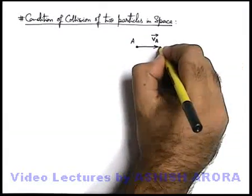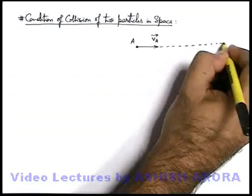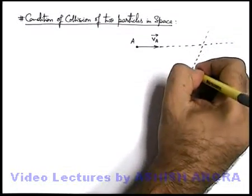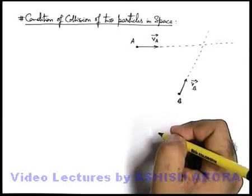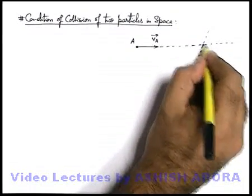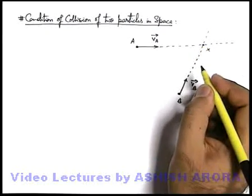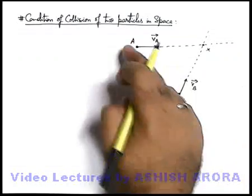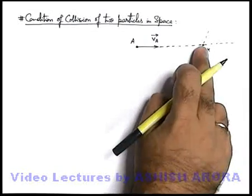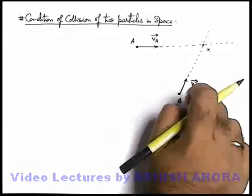If we just extend their lines of motion, so A would be moving on this line and B would be moving on this line. Their lines of motion intersect at point X.